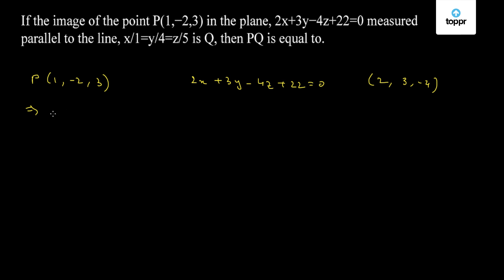can be represented as (x-1)/1 = (y+2)/4 = (z-3)/5 = k. So any point on this line will have the coordinates x = k+1, y = 4k-2, and z = 5k+3.